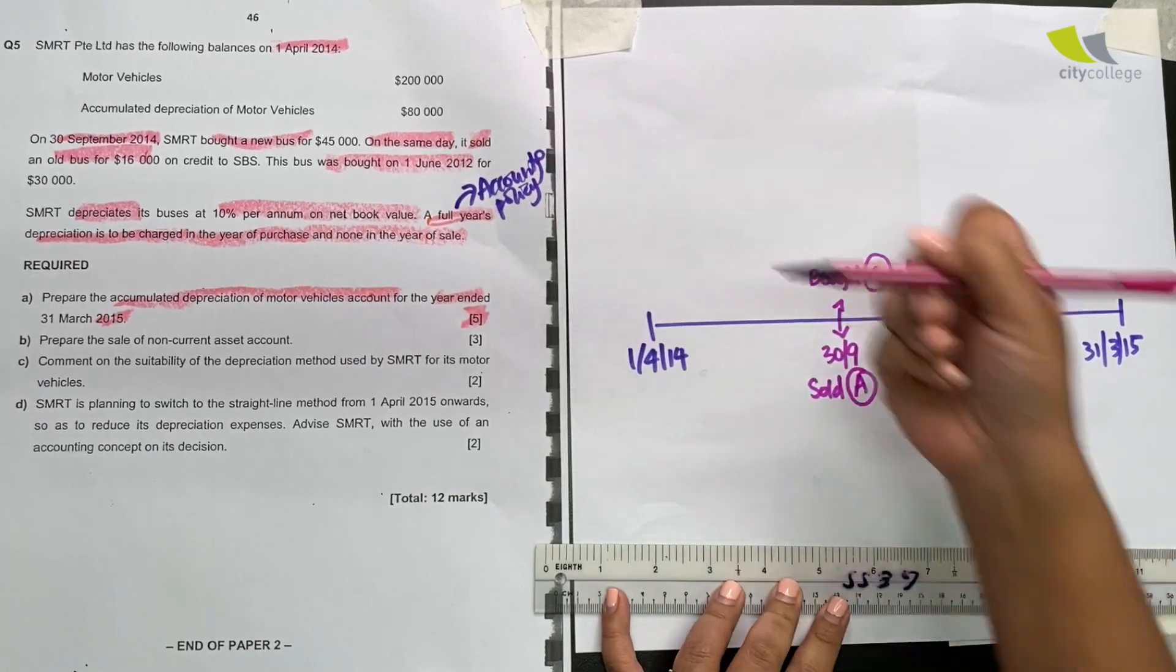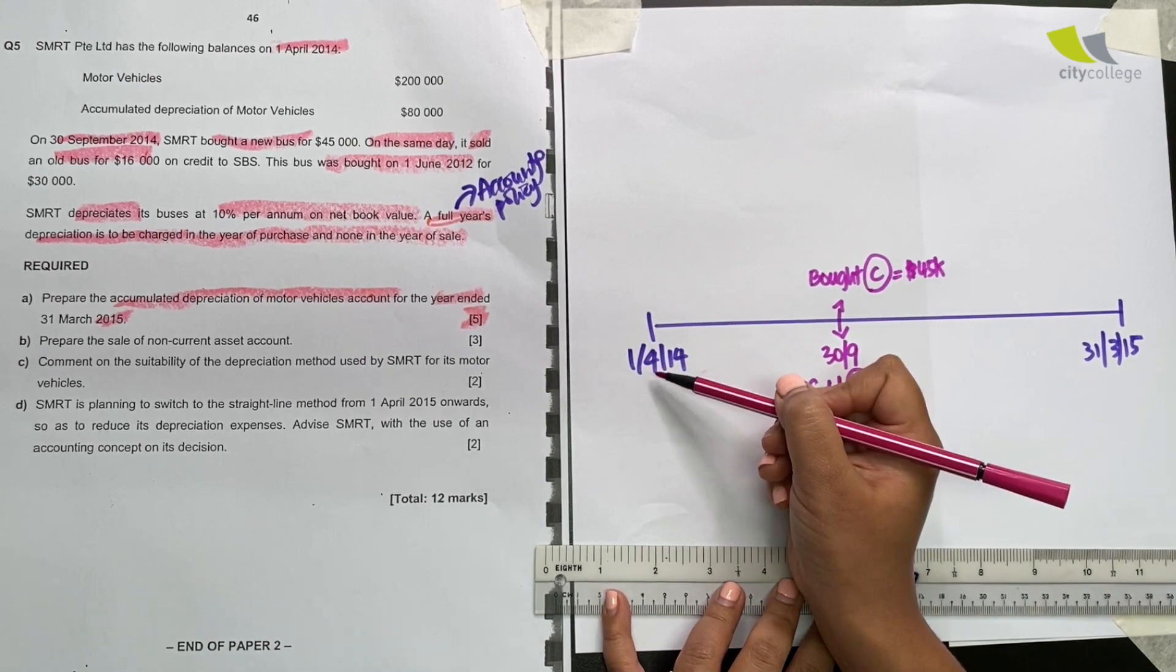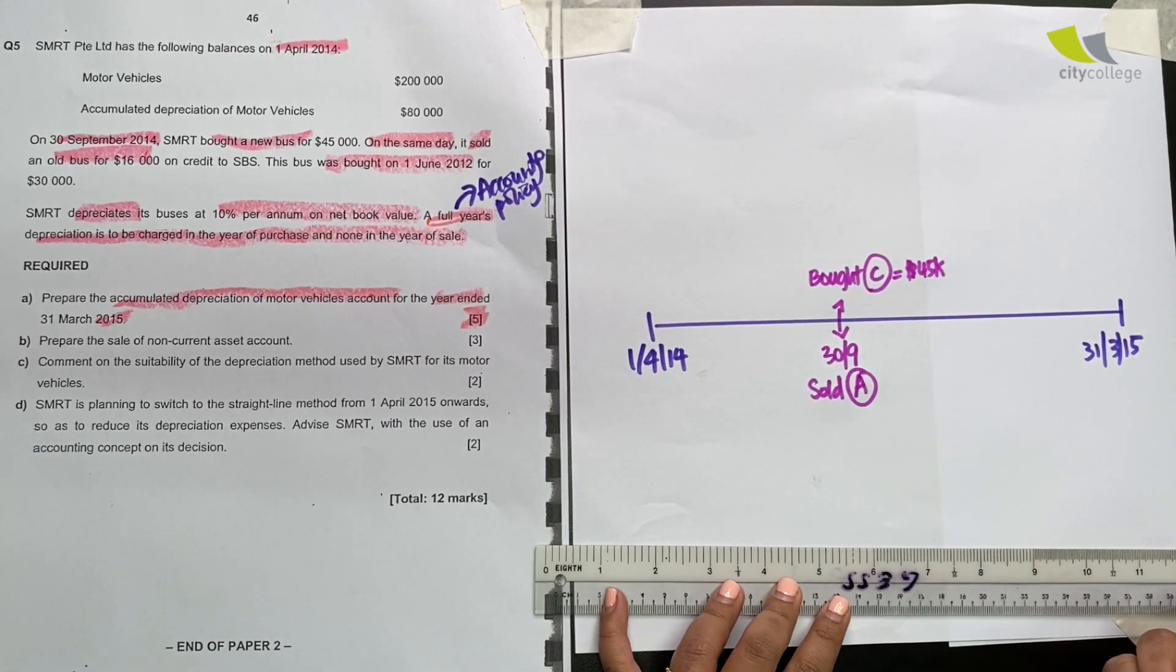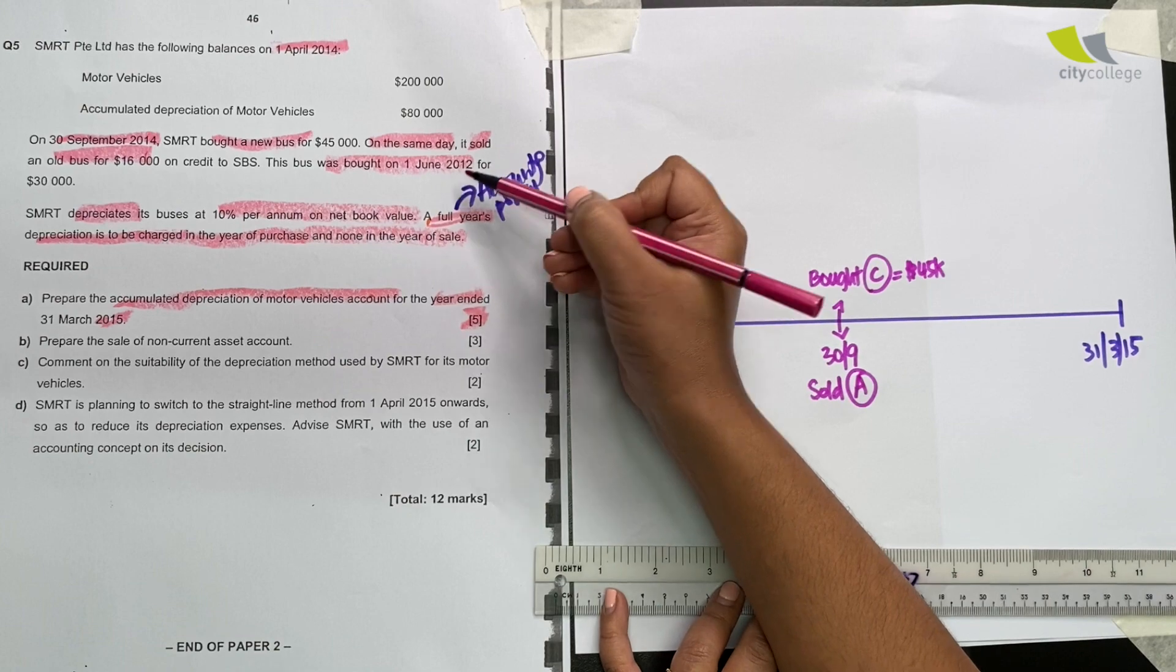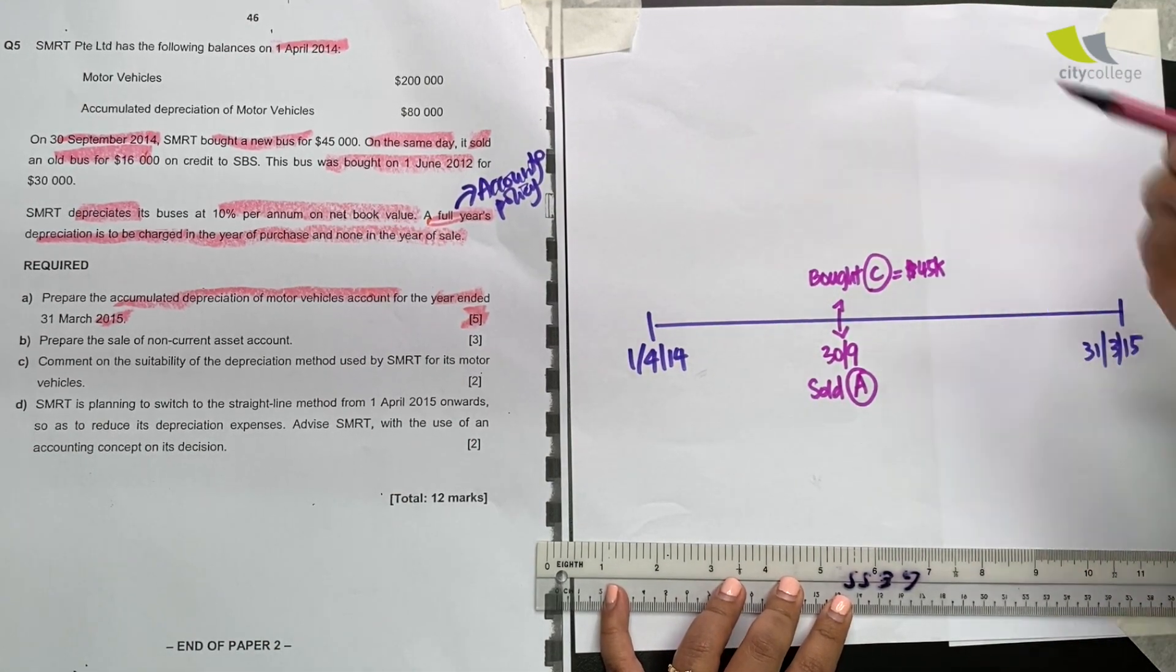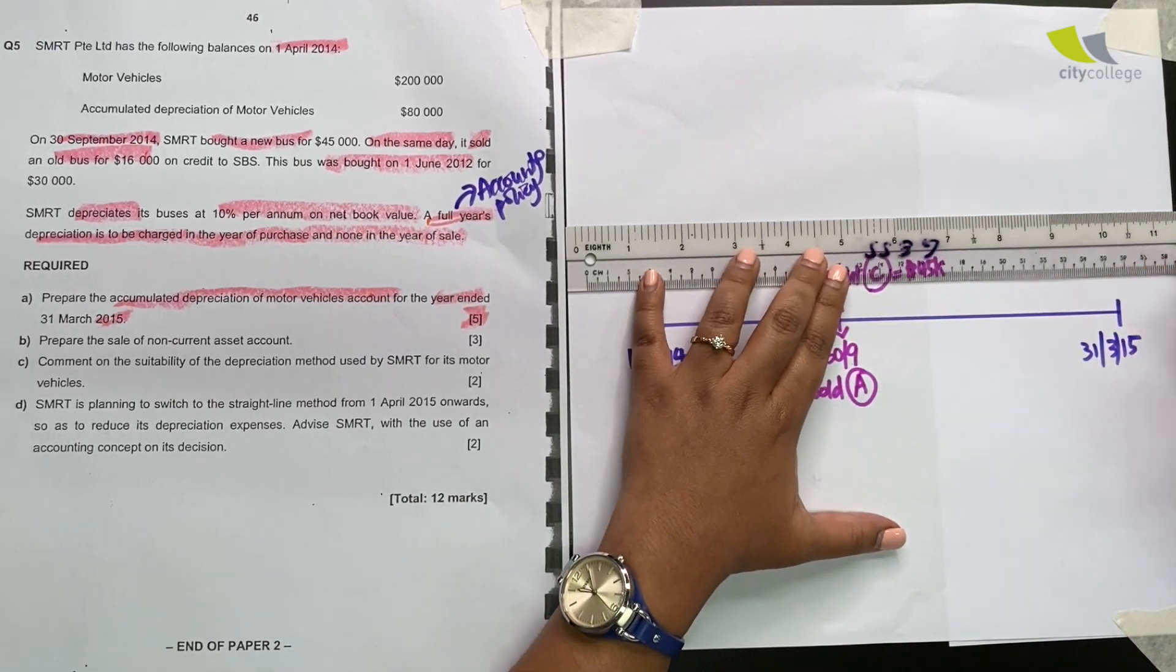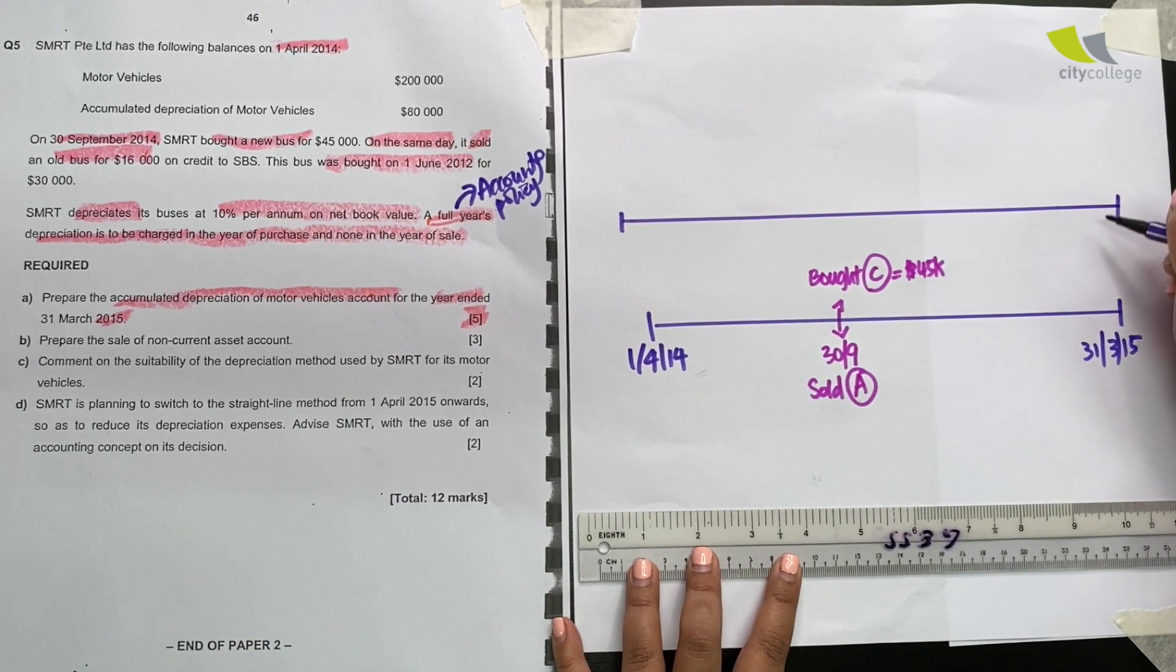It was bought on 1st June 2012. Now this A is an old bus. It wasn't bought on 1st April. It was bought before that. That's why they use the word old. And let's read carefully. When was it bought? 1st June 2012. So looks like I need to backtrack my timeline. Which is why I've left some space above. Because I need to draw the years before. So let's do it right now.